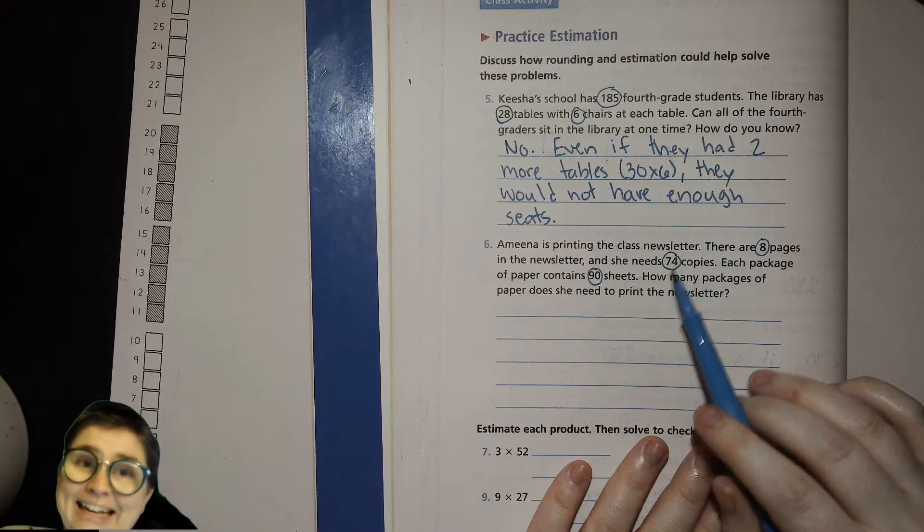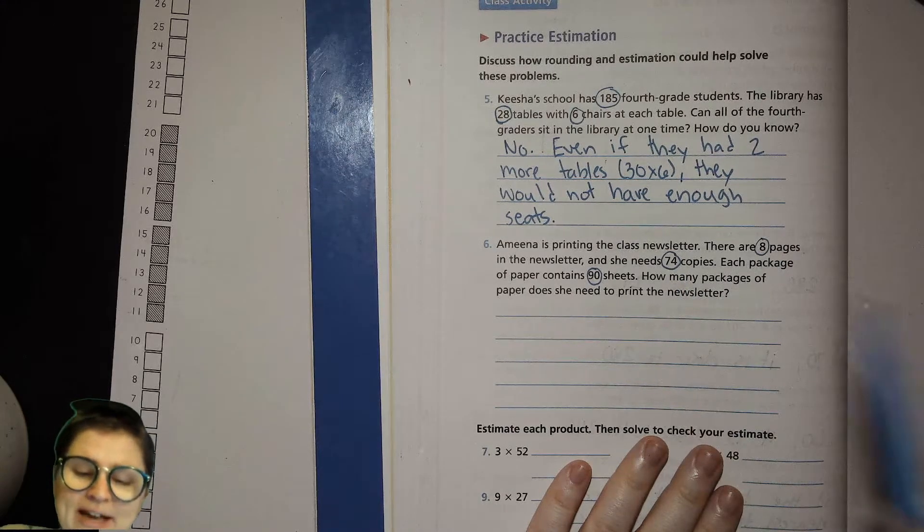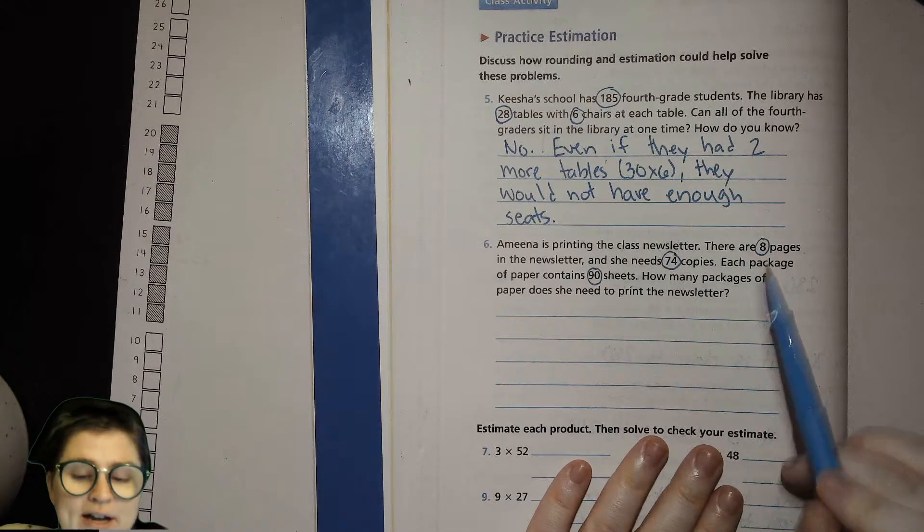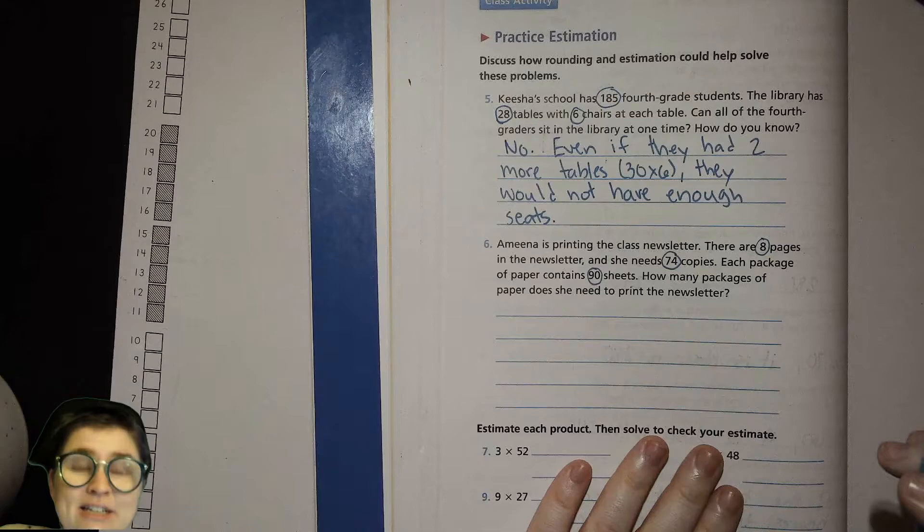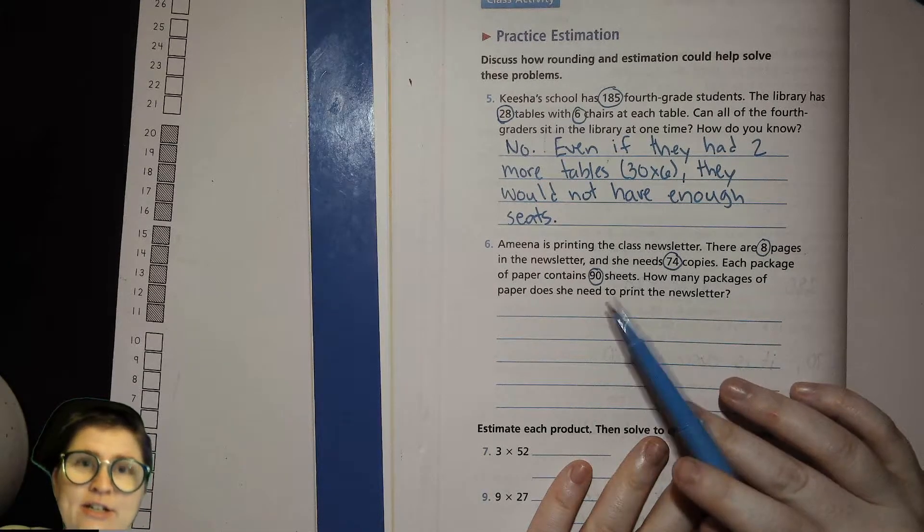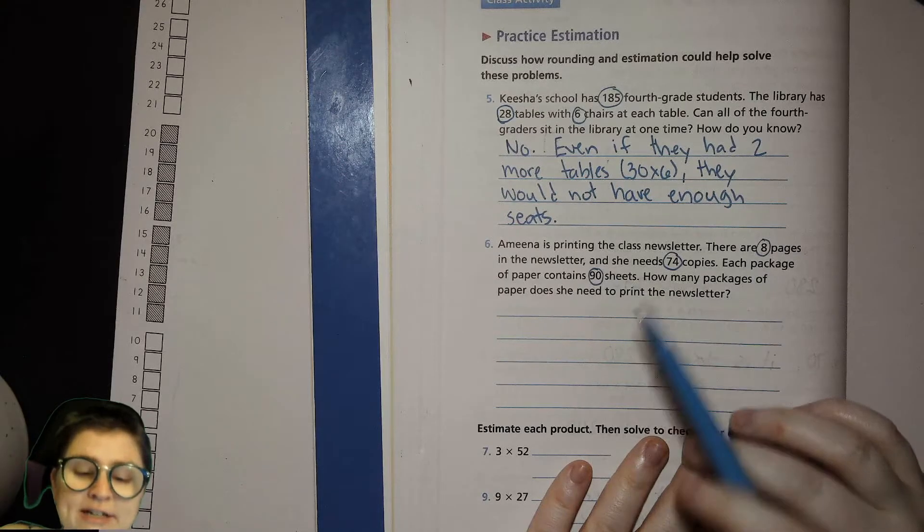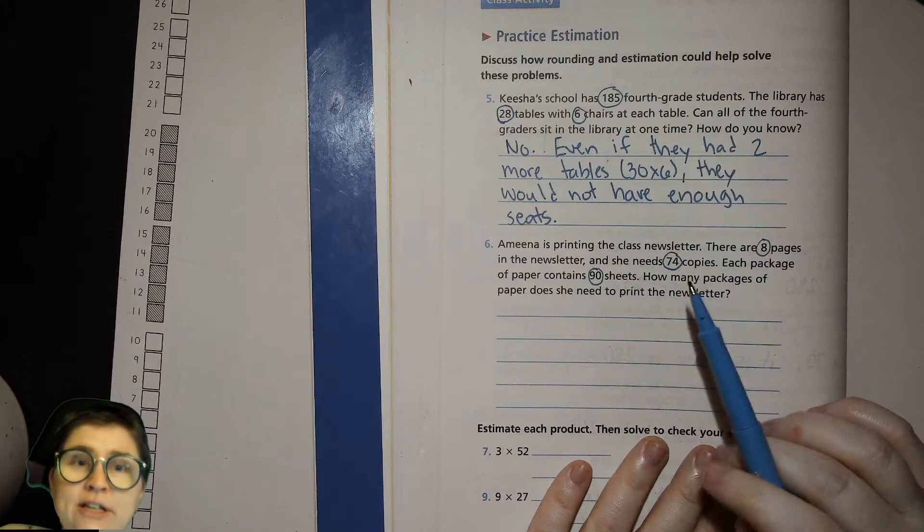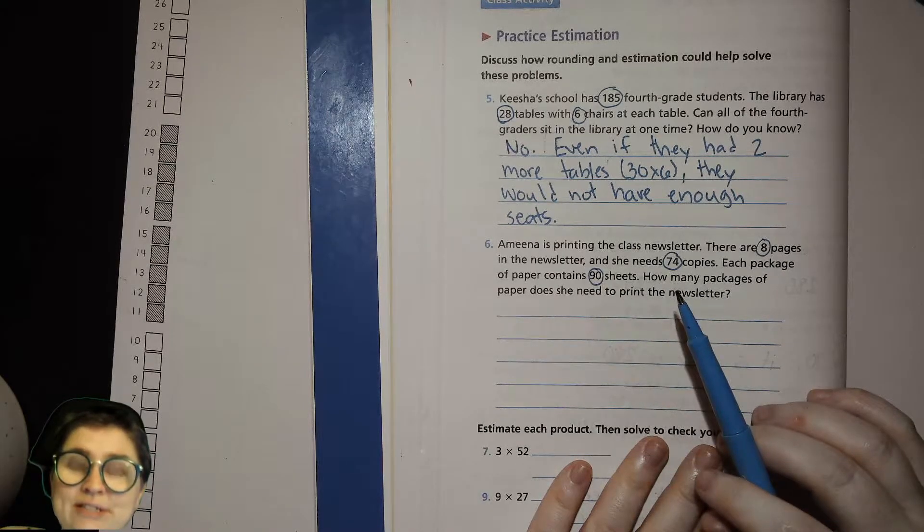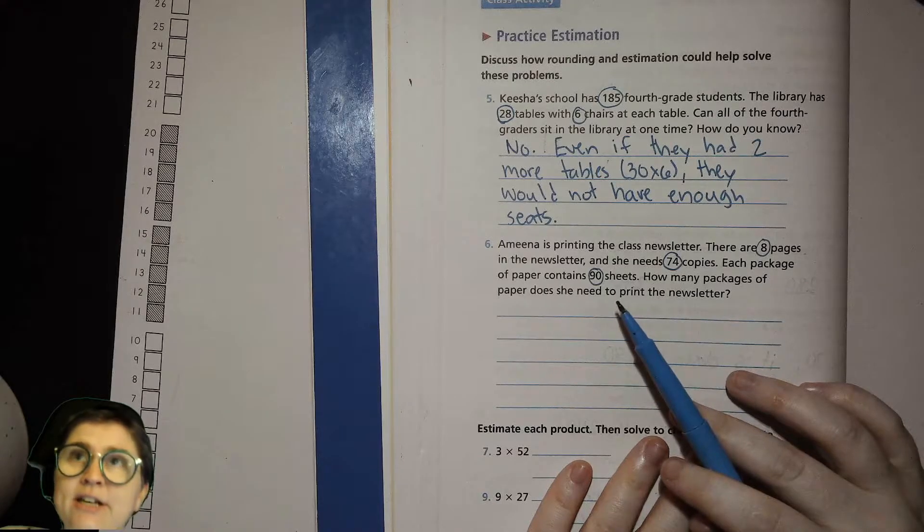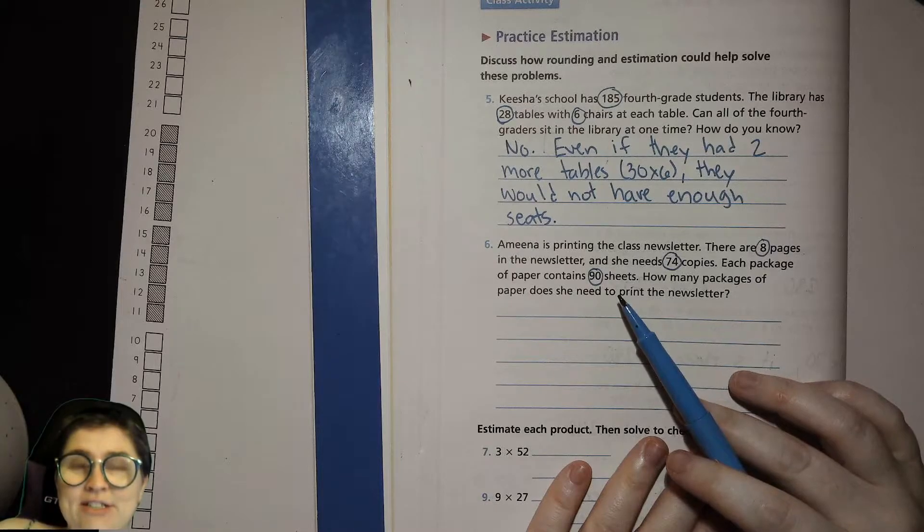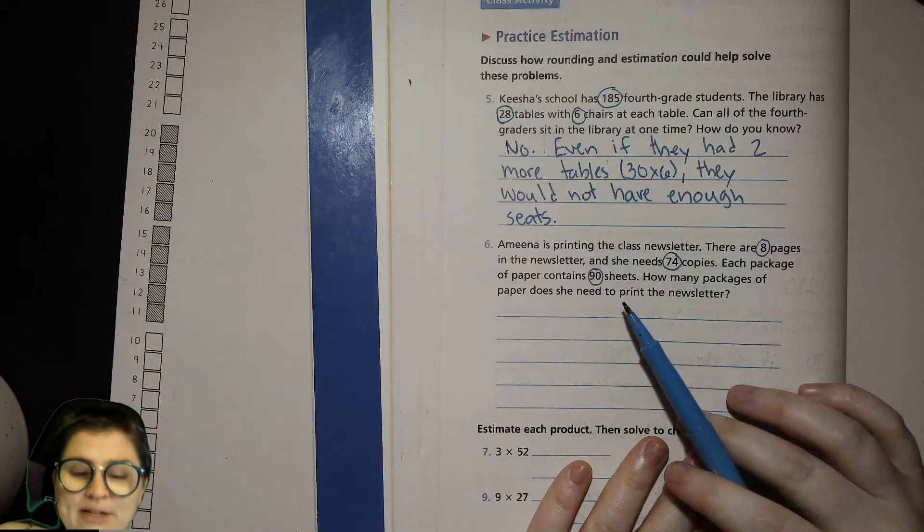So let's do eight times 80, and then she'll have extra. Eight times 80. Well, eight times eight is 64. And so eight times 80 is 640. Each package contains 90 sheets. So in one package, there's 90. In two packages, there's 180. In three packages, 270. In four packages, 360. In five packages, there's 450 pages or sheets. In six packages, 540. In seven packages, 630.